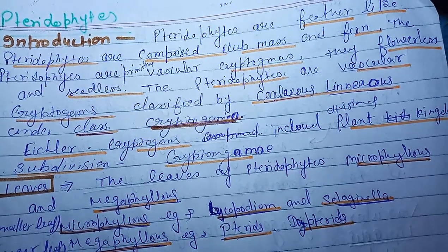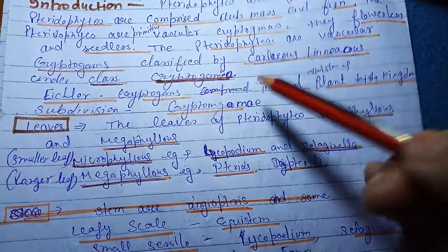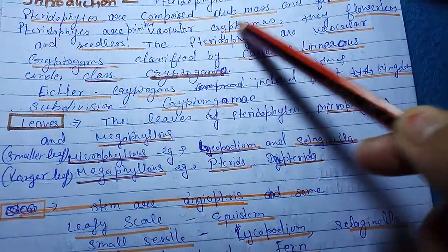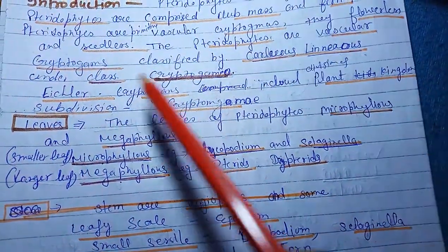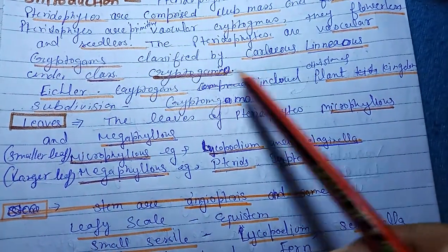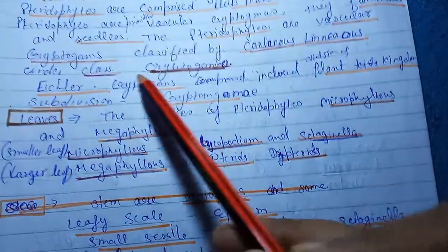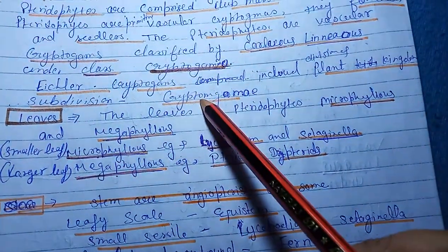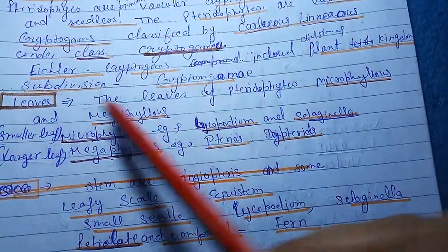Seed bearing pteridophytes are vascular cryptogams and are classified by Carolus Linnaeus under the class Cryptogamia. Cryptogamia includes the plant kingdom and subdivision is cryptogamae.